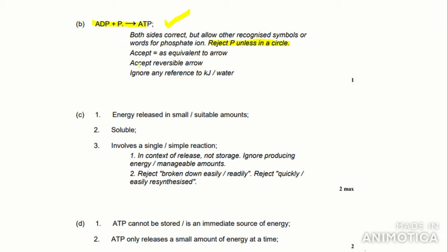It says ignore any reference to kilojoules or water. For the next part of the question — energy released in small amounts, which we wrote — you could also put 'soluble' as that affects biological processes, and 'involves a single or simple reaction,' which we put as well, so you'll get two marks for that. Again it says two marks, so if you put all three of these points you do not get three marks — you can only get a maximum of two.